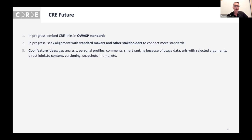Looking at the future for CRE: we are currently working on embedding CRE links in OWASP standards. You saw a mock-up of ASVS with an extra column having these CRE links — once you have those, you can quickly jump from ASVS sources to the Testing Guide, CWE sources, or NIST sources. So if you're looking into encrypting personal data at rest, you can find everything about cryptography and also about personal data from various resources. You can even imagine articles and more guideline work included, and as a user you can specify what type of resources you find interesting to see when linked through the CRE. We're also in the process of aligning with standard makers and other stakeholders to connect more standards.